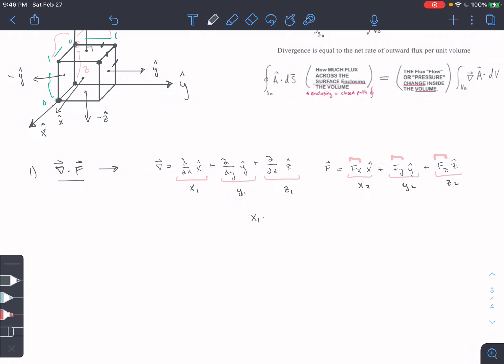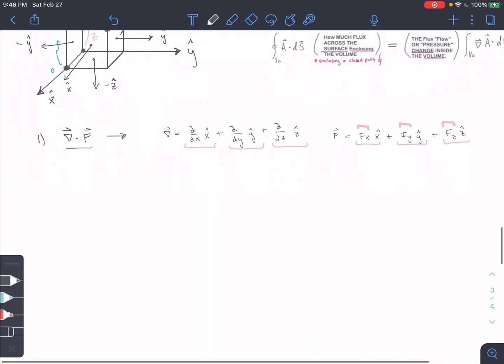So, you know, x1 dotted with x2, right, plus y1 dotted with y2 plus z1 dotted with z2, right? So that's what we're going to do here. Same approach, even though our vectors have a lot more going on here. Okay, so our del operator dot f is going to be equal to the partial derivative with respect to x of f of x x hat, plus the partial derivative with respect to y dotted with f of y y hat.